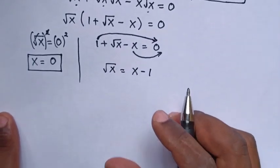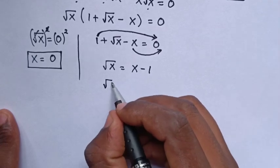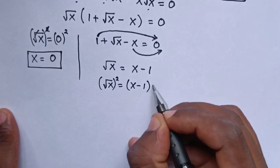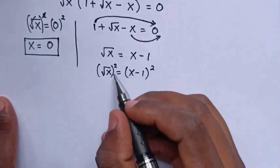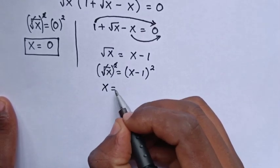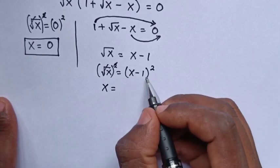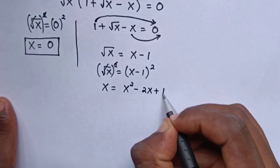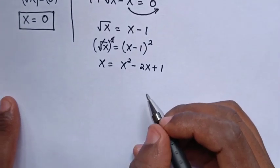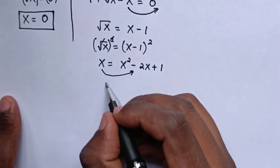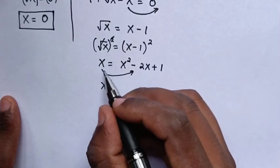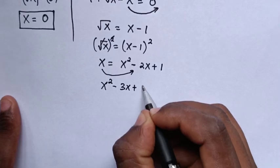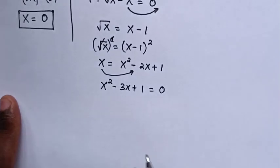We square both sides: square root of x squared equals (x minus 1) squared. The square cancels with the square root on the left, giving x equals (x minus 1) squared, which expands to x squared minus 2x plus 1. Taking x to the right side gives x squared minus 3x plus 1 equals 0.